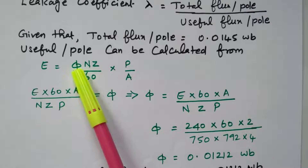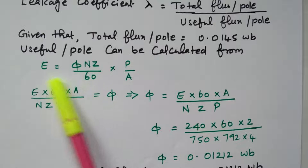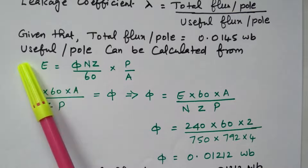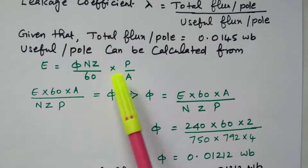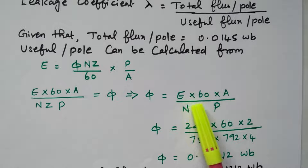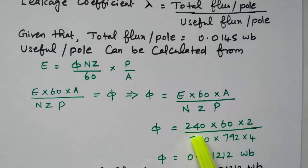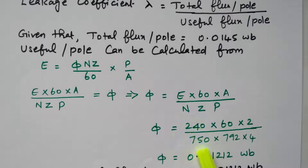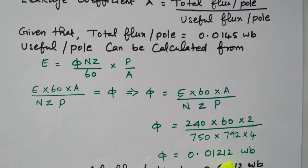Only phi is unknown, so we can calculate the phi value. Bringing all other terms to the left-hand side: 60 and A go to the numerator, while N, Z, and P go to the denominator. So that gives us: phi equals E times 60 times A divided by N times Z times P. Substituting values: EMF is 240, times 60, number of parallel paths is 2 (wave connected), number of conductors Z is 792, speed N is 750, number of poles P is 4. By simplifying, we get phi equals 0.01212 Weber.